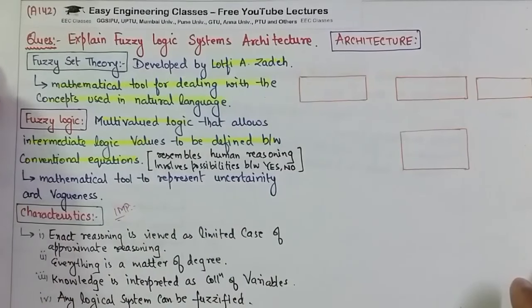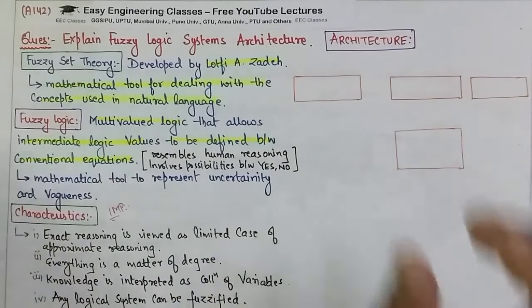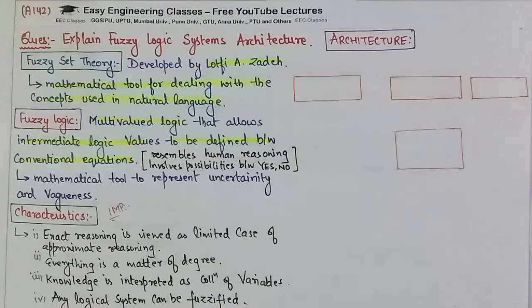Now let us come to the main point of this video which is the architecture of fuzzy logic system. So in the architecture of fuzzy logic system, basically there are four components.